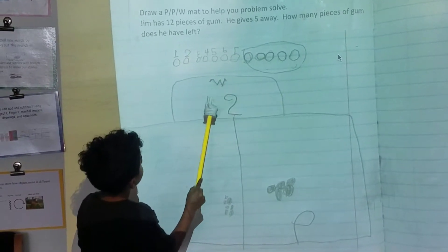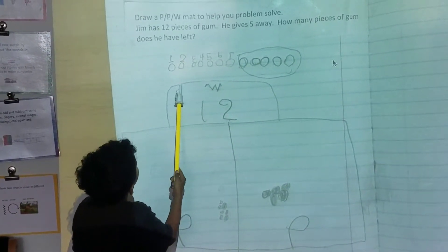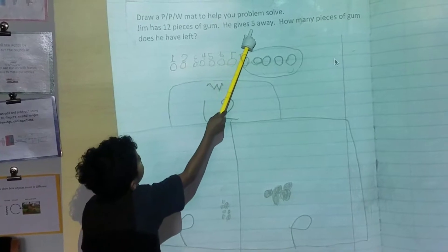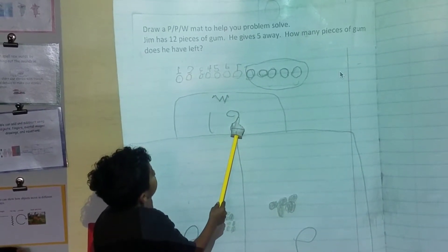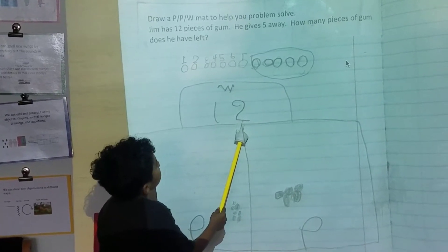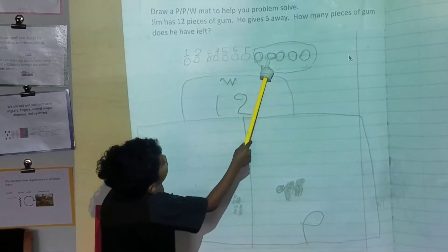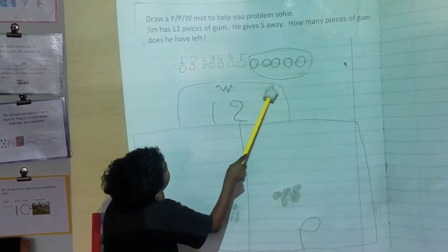And then I count. So it said get 5 away. So I think that's minus 5. So I circled 5 of them.